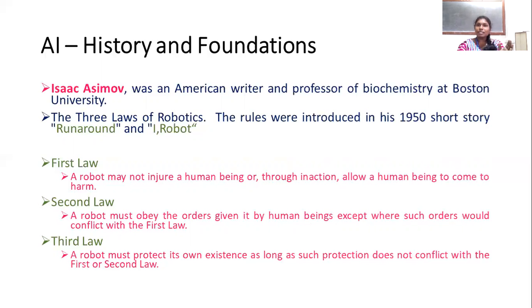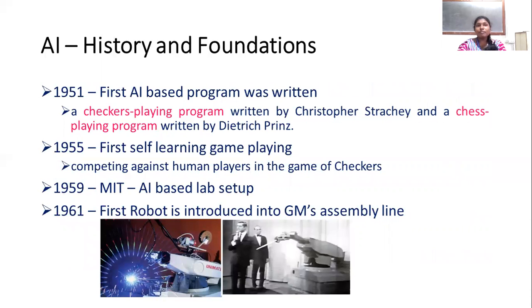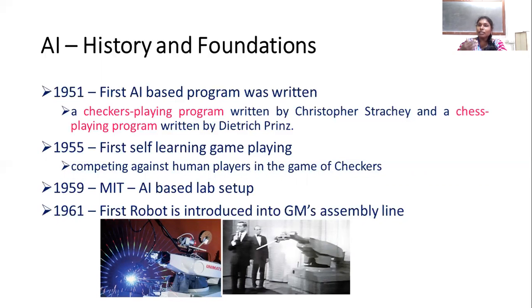The robot concept started with Isaac Asimov in the 1950s. The first AI-based programs were developed — both gaming and chess playing programs were developed. In 1951 and 1955, a self-learning game was created that a human could compete against, and the program automatically learned.